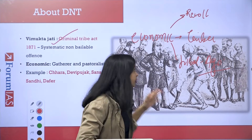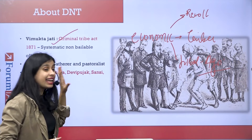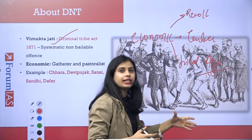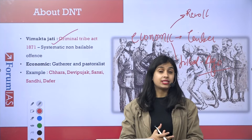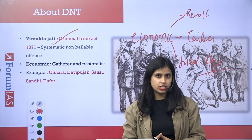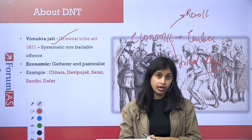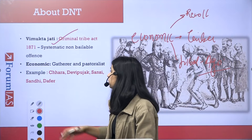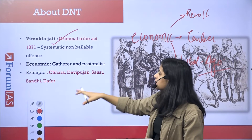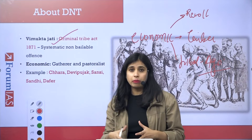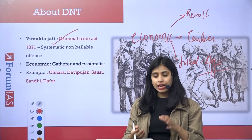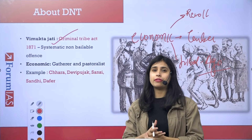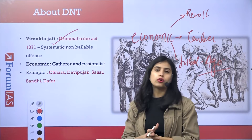Because of this, many tribal people were subjugated and exploited by British policies. The exploitation went so far that the British even started taking tribal children away, claiming they were going to teach them civilization values. Examples of these tribes include Chara, Devi Pujak, Saansi, and Sansi. Remember these examples as they can give you an edge in your exam.